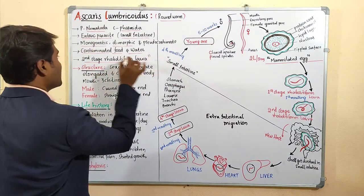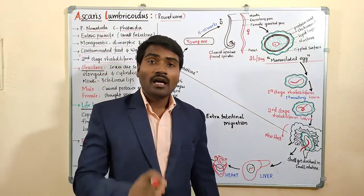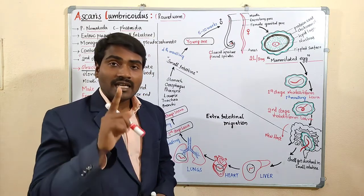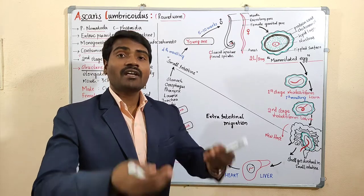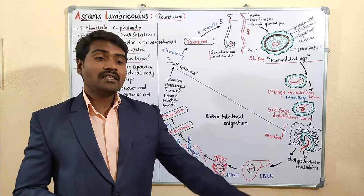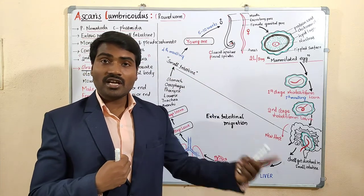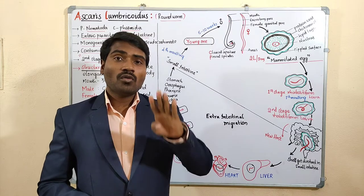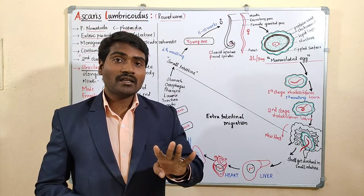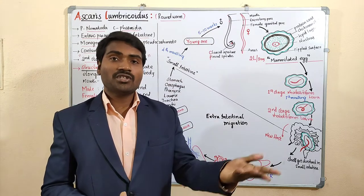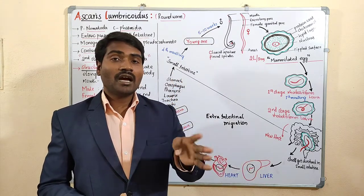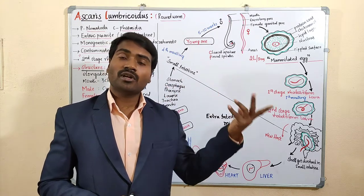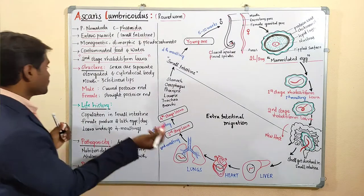The larvae of Ascaris lumbricoides are rhabditiform larvae. The second-stage rhabditiform larva is the infective stage. When we take contaminated food and water, these larvae enter our body. These larvae undergo 4 moltings. Molting means removing the outer sheath or layer. There are 4 moltings and 4 larval stages: 1st, 2nd, 3rd, and 4th stage larvae. After the 4th stage, it becomes an adult.